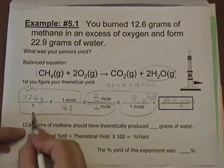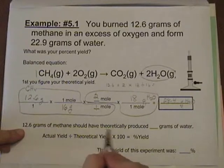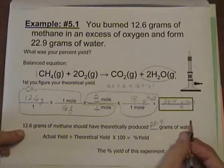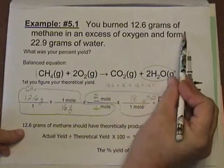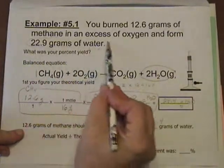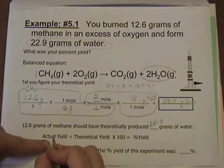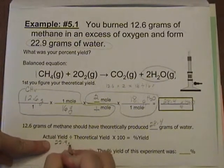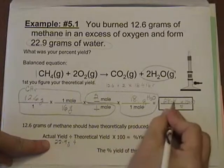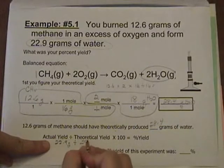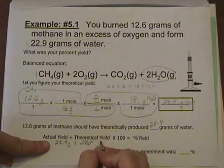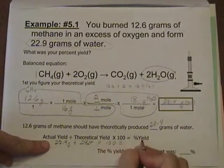It's saying 12.6 grams of methane should have theoretically produced 28.4 grams of water. But it says it actually formed 22.9 grams of water. So actual yield was 22.9 grams, and our theoretical yield was 28.4 grams.